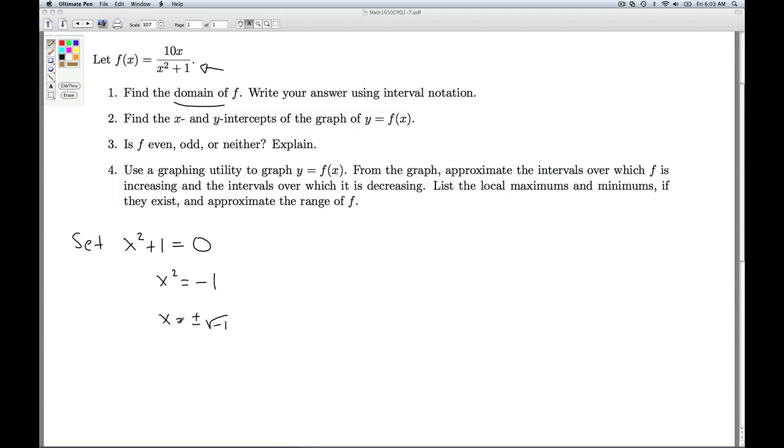So this tells us that there's no real numbers that make the denominator 0, which means we have no restrictions on the domain whatsoever. So our domain is minus infinity to infinity, and that'll do it for number 1.